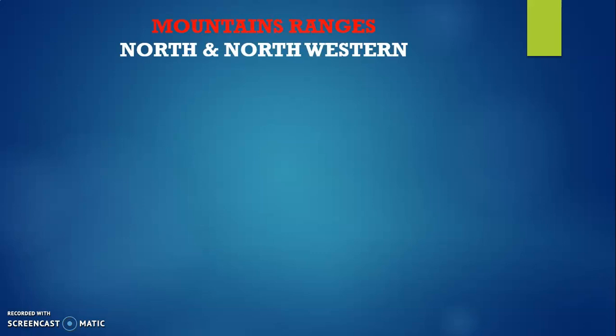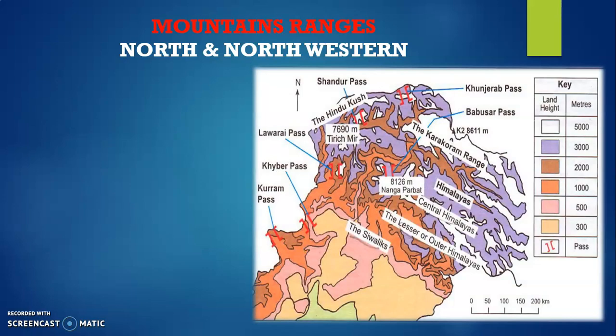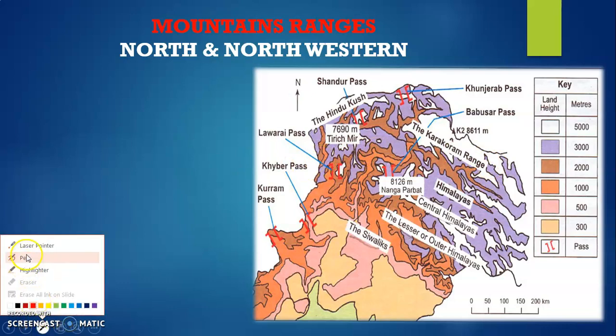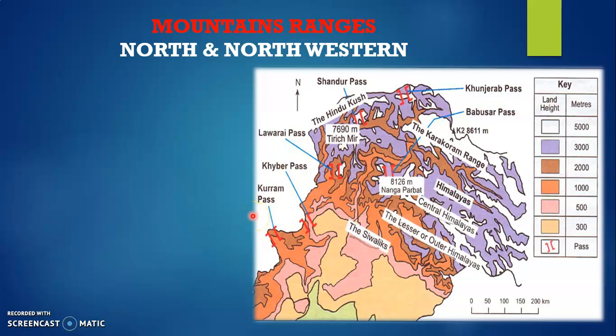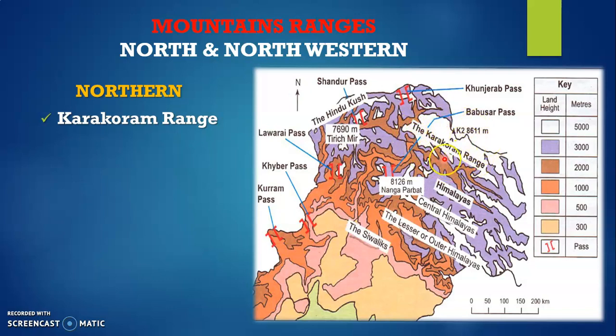Starting from the very first topographic region of Pakistan: mountain ranges related with the north and northwestern. I'm going to discuss about the relief first and move in order. Here we have a map on screen. When we talk about the north and northwestern mountain ranges of Pakistan, let's start from the very first one. If we talk about the northern mountain ranges, Karakoram Range is number one. Please identify these locations very carefully because you are basically bound to attempt these questions when they come in the paper — labeling is something which has been asked.